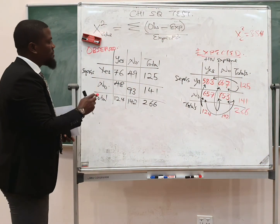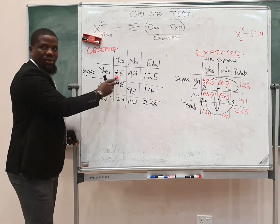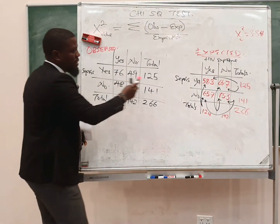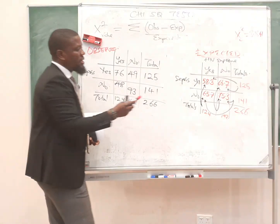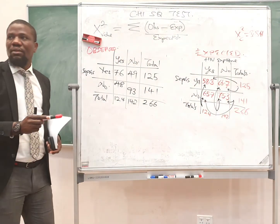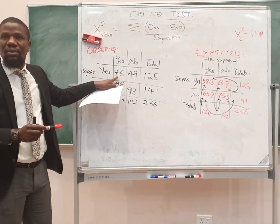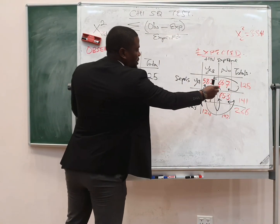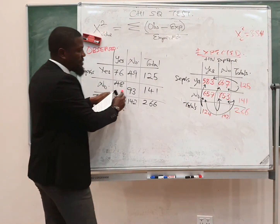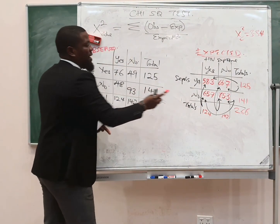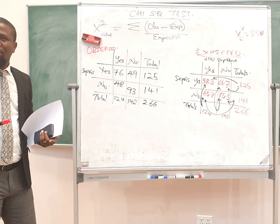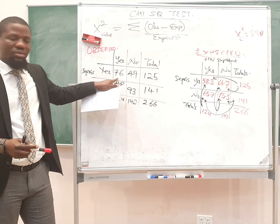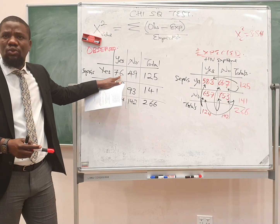What does this mean? This means that when you come to this cell where you have the observed, you are going to say observed minus expected for the same cell, divided by expected for the same cell. The next cell: observed minus expected divided by expected. Observed minus expected divided by expected. This is why some people tend to put the observed and the expected in the same corner, just so that you can easily do your work.